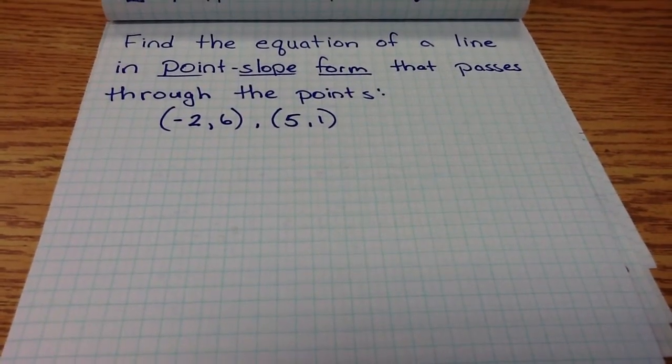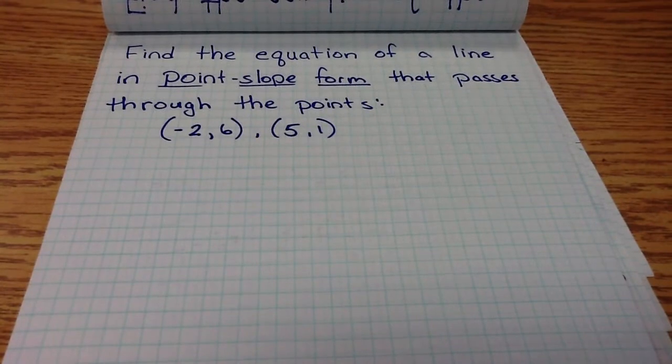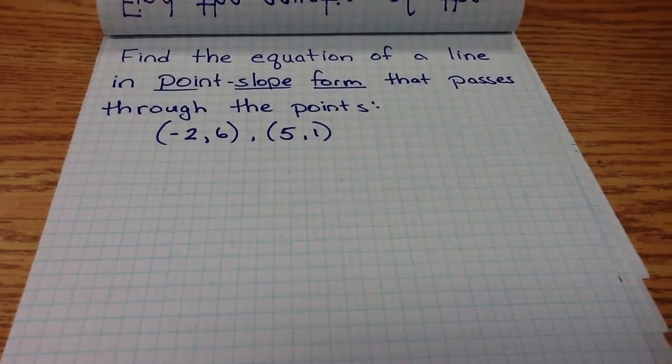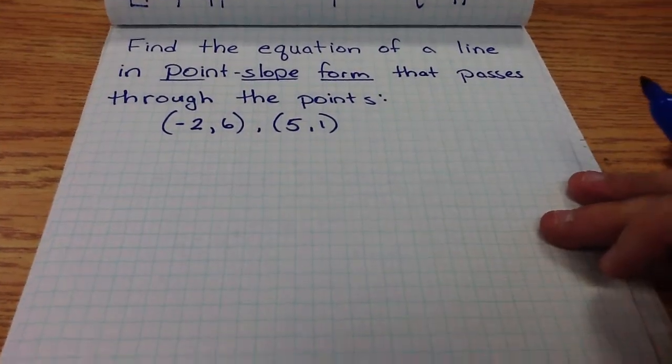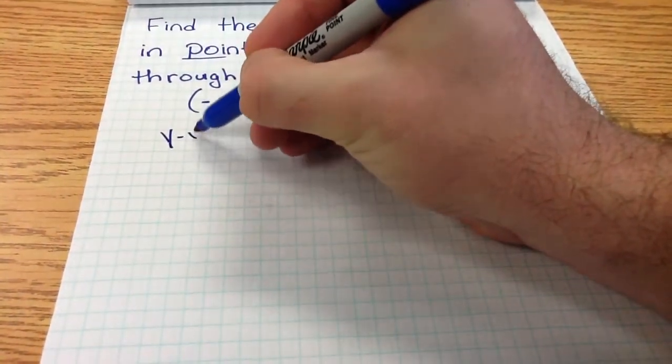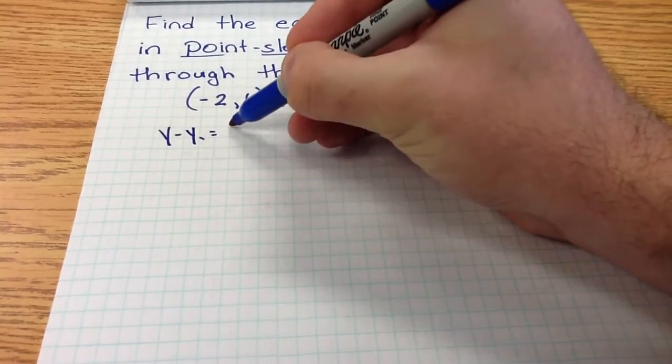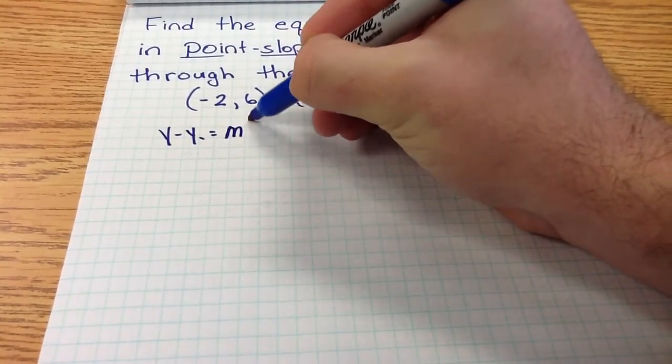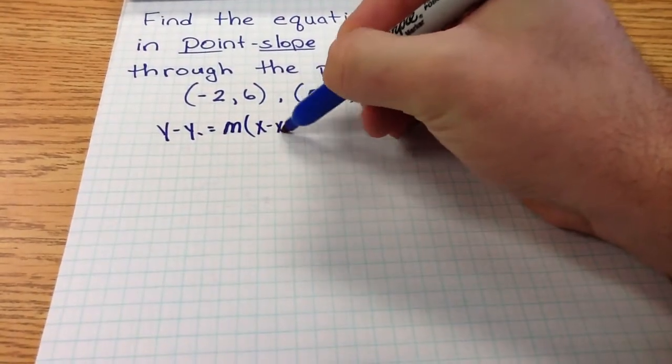The first step in solving this problem is remembering what point-slope form is. What's the general form? What do the equations look like? From our notes, we remember that point-slope form is y minus y1 equals m times x minus x1.